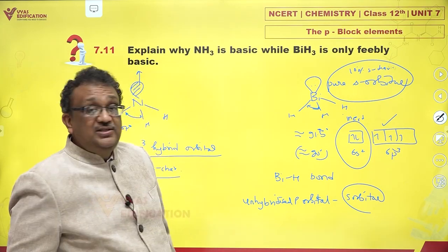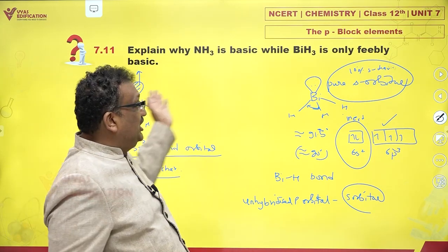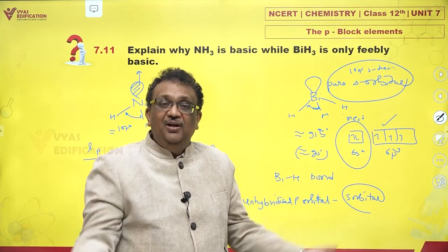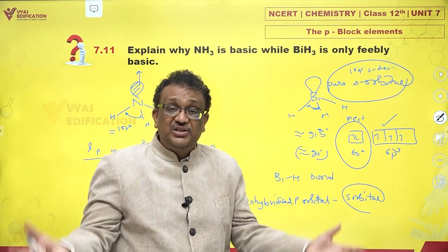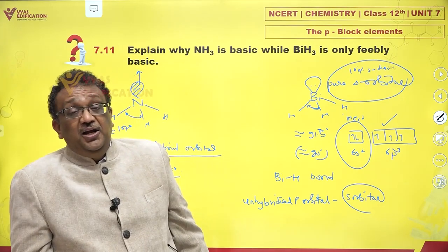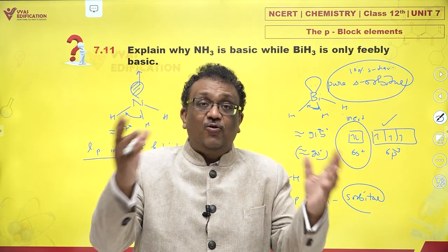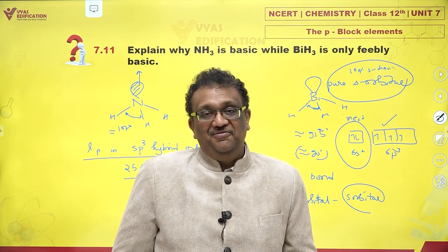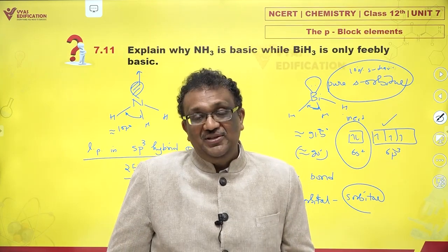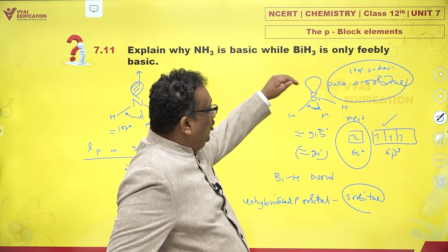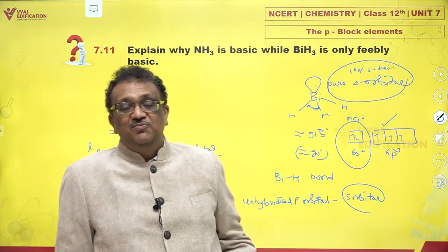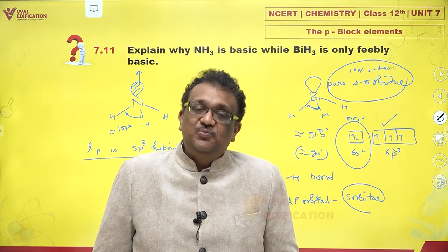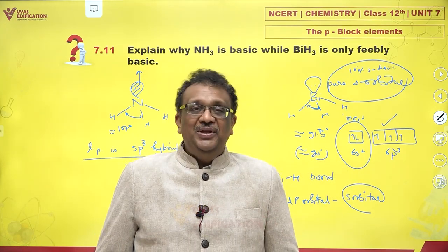There is also a third reason. The sp3 orbital of ammonia is in the second shell, whereas the s orbital of bismuth is in the sixth shell. The sixth shell is a big shell — the volume of the 6s electron cloud is very high. Greater the volume over which the electron is spread, the more stable and less reactive it is. Because of all these three reasons, donating the lone pair for bismuth becomes much more difficult, and the basic strength becomes so low that it is practically non-basic.